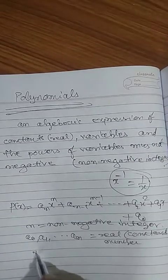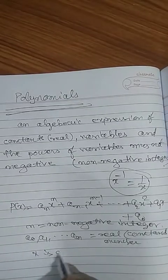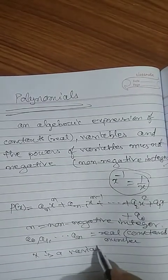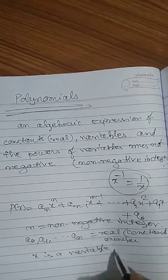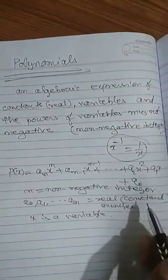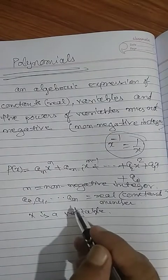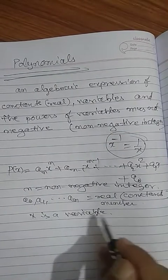What is x? x is a variable. Here I have taken only one variable; some questions can have more than one variable. Just I recalled what is a polynomial.